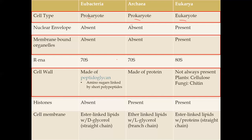Something else that differs between prokaryotes and eukaryotes is their ribosomal RNA. Ribosomes are the structures that synthesize proteins. Prokaryotes have a 70S ribosome while eukaryotes have an 80S ribosome — these refer to sedimentation coefficients, which is one way to separate different chemicals. What's important is that both Eubacteria and Archaea share the 70S ribosome, while Eukarya has the 80S ribosome.